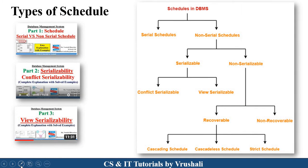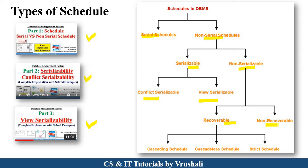The first thing is schedules in DBMS and schedules in transactions. There are two types of schedule: one is serial schedule and another one is non-serial schedule. This non-serial schedule can be divided into two parts: serializable and non-serializable. Serializable schedule can again be divided into conflict and view serializable. We already discussed those in previous parts. Now in this session, we will discuss about non-serializable schedule and their two parts: recoverable and non-recoverable schedule.